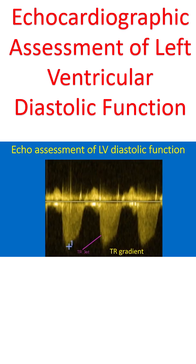Tricuspid regurgitation jet velocity and pulmonary regurgitation end diastolic velocity, indicating pulmonary hypertension, are also taken as surrogates of left atrial pressure in the absence of pulmonary disease.